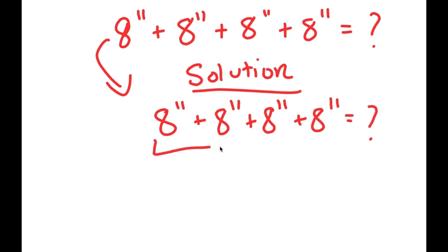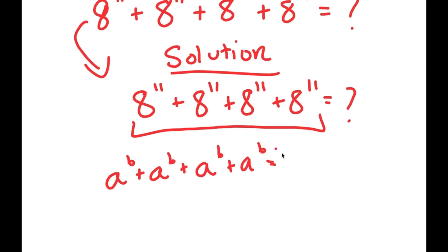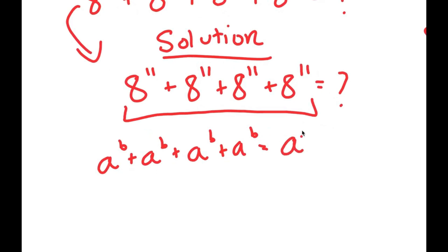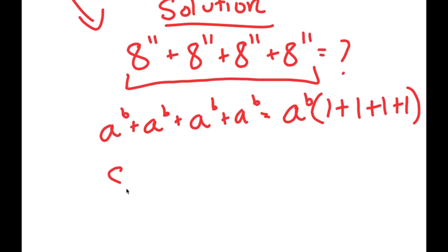Notice how all of these terms here are the same — I have all the same terms adding with each other. If I have something in the form 8 to the power of b plus 8 to the power of b plus 8 to the power of b plus 8 to the power of b, I can simply factor out 8 to the power of b. So I get 8 to the power of b times 1 plus 1 plus 1 plus 1. In this case, I have 8 to the power of 11 repeated 4 times, so I factor out 8 to the power of 11 and get 8 to the power of 11 times 1 plus 1 plus 1 plus 1.